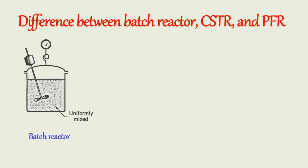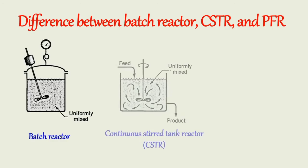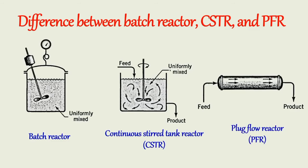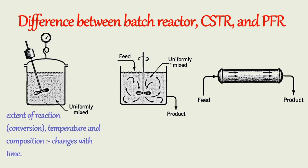In a batch reactor, the reactants are charged at the beginning into a container, left to react for a certain period under certain agitation, during which no material is fed or removed from it, and the resultant product mixture is withdrawn at a subsequent time. In a CSTR reactor, reactants are introduced and the product mixture is withdrawn simultaneously in a continuous manner, due to which a certain pool of reaction mixture is always maintained in it. In PFR, reactants enter at one end and the product mixture leaves from the other end. In a batch reactor, the extent of reaction (conversion) and properties such as temperature and composition change with time, but at any instant of time the composition is uniform throughout the reactor zone.